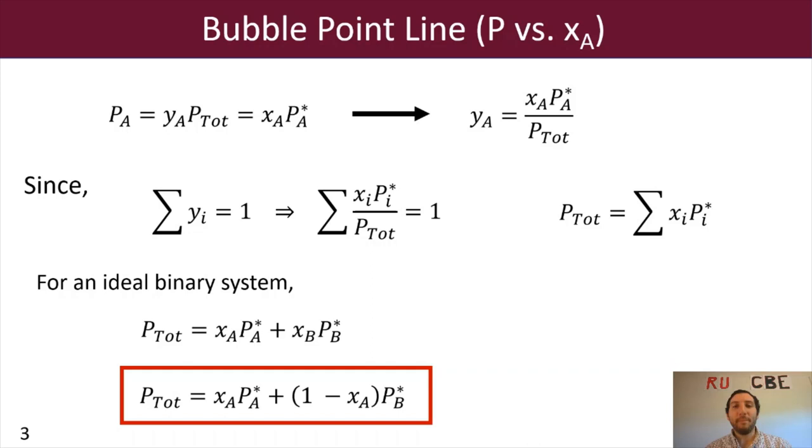And as long as you have a temperature, you will then be able to create your bubble point line. Because you will then be able to get your PA star and PB star. And then your total pressure is just the sum of XA PA star plus XB PB star. And that's all you need to do in order to make your bubble point line.